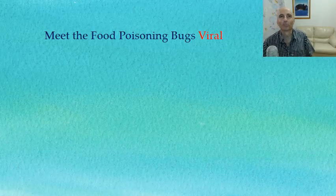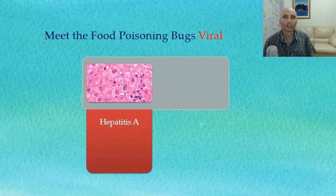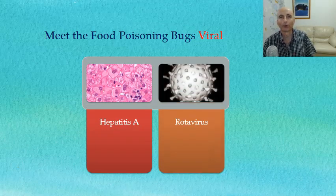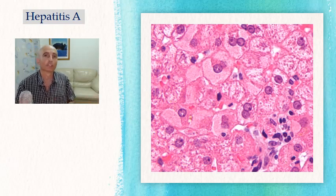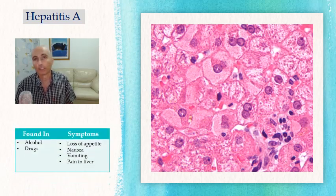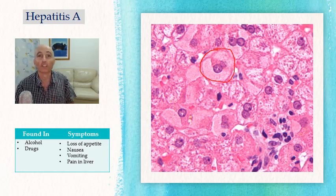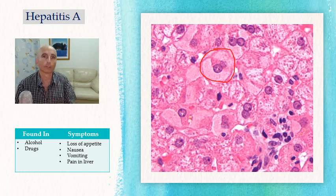There's more! Now let's meet the viral food poisoning bugs. First, we have Hepatitis A, and second, Rotavirus. Hepatitis A can be contracted from drinking contaminated alcohol, taking drugs, or touching something contaminated. It occurs when Hep A is taken in through the mouth — the virus multiplies in the liver and is passed out via feces. You can see a photo here of a broken-down liver because of Hepatitis A. Symptoms include loss of appetite, nausea, vomiting, and pain in the liver. It spreads via direct contact with food and beverages, so maintain high personal hygiene and environmental standards.